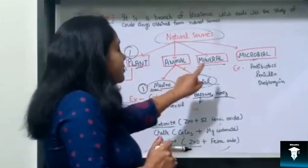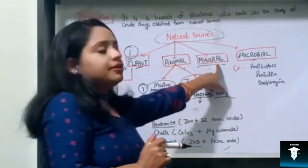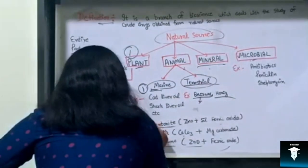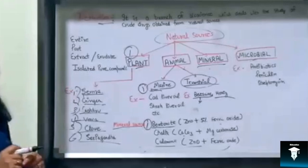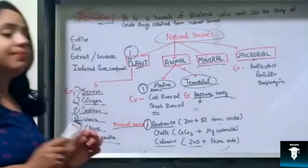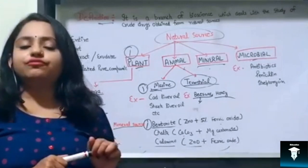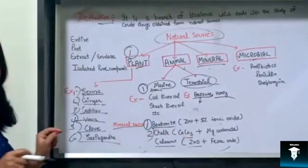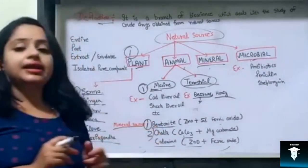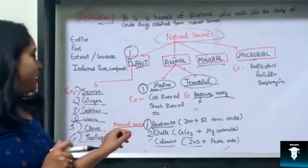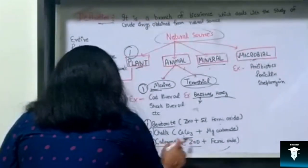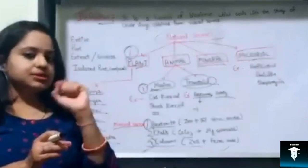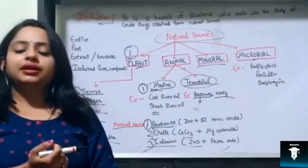Next are examples of drugs obtained from mineral sources. First is Bentonite — it is a combination of zinc oxide and ferric oxide, mainly used as a suspending agent, emulsifying agent, and base for ointments. Second is Chalk — it is a combination of calcium carbonate and magnesium carbonate, used as an antacid and in the treatment of diarrhea. Third is Calamine — a combination of zinc oxide and ferric oxide, used as a skin protectant with astringent and soothing properties.